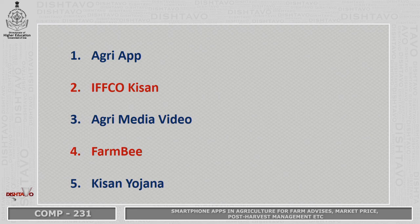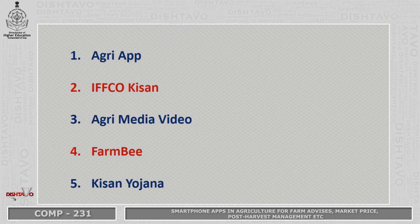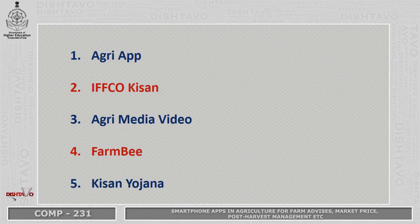Farm B: information on certain cash crops can be traced through this app, and information regarding various allied sector activities can be traced as well — for example, sericulture, bee culture, fisheries, etc. Then, another application is Kisan Hyojana. Whatever agricultural schemes supported by the Government of India or other state governments are listed in Kisan Hyojana. If a farmer considers his crop is related or synchronized with a particular scheme, from that application itself the farmer can avail the government scheme.